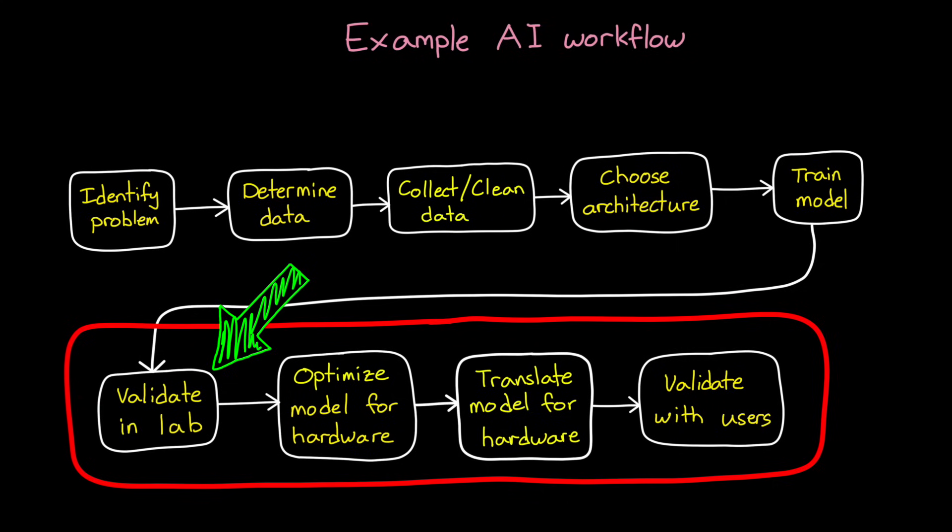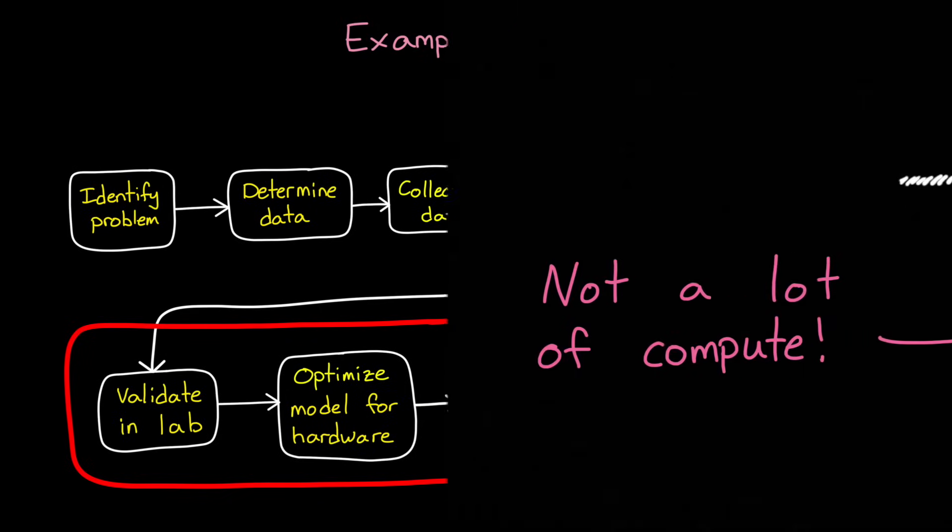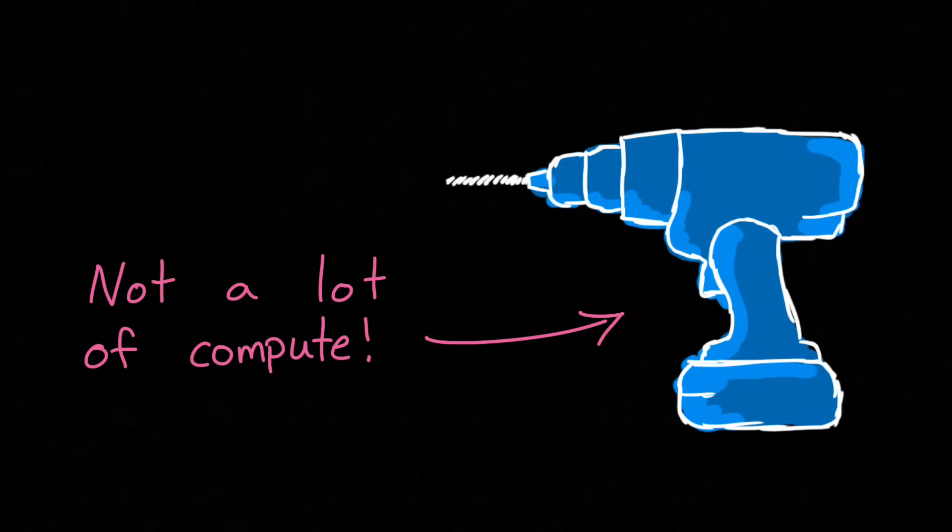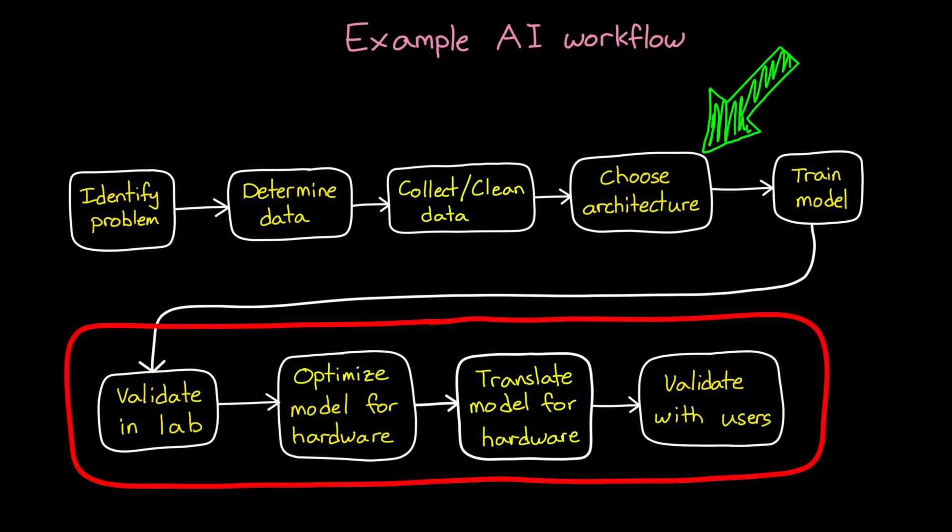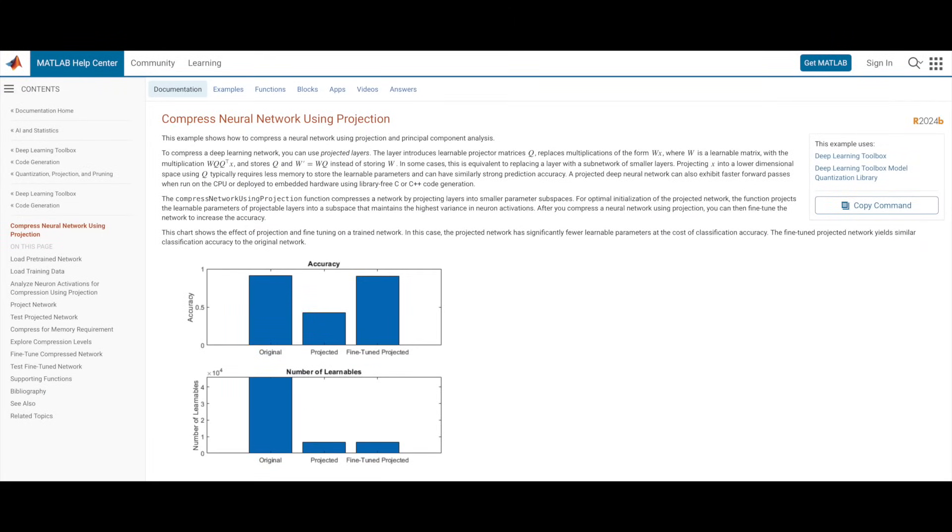All right, moving on from validation in a lab setting, let's talk about fitting the model onto the target processor. And the unfortunate reality of edge and embedded AI is that you're often working with resource-limited hardware. This means that you need to put in effort to optimize your model for the hardware by making it smaller, faster, and more efficient in terms of compute, memory, and power. And there's a few strategies for this. Sometimes you go back and change the architecture itself, maybe simplifying layers or reducing parameters in a deep network, or seeing if you can get away with a simpler machine learning model like a decision tree. Other times you take a trained model and apply techniques like pruning, quantization, or projection-based compression to reduce its footprint without sacrificing too much accuracy. And there's a really good MATLAB example showing how powerful projection compression is for compressing a model while maintaining accuracy. I think it's worth checking out, so I'll leave it in the description below.